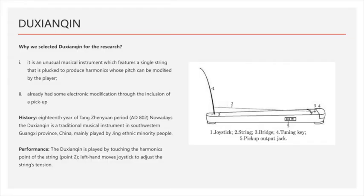That sounds beautiful. The Du Chen Qing is an interesting and unusual musical instrument. It features a single string that is plucked to produce harmonics whose pitch can be modified by the player using the joystick. The Du Chen Qing has over a thousand years of history and is a traditional musical instrument in southwestern Guangxi province, China, mainly played by the Qing ethnic minority people.